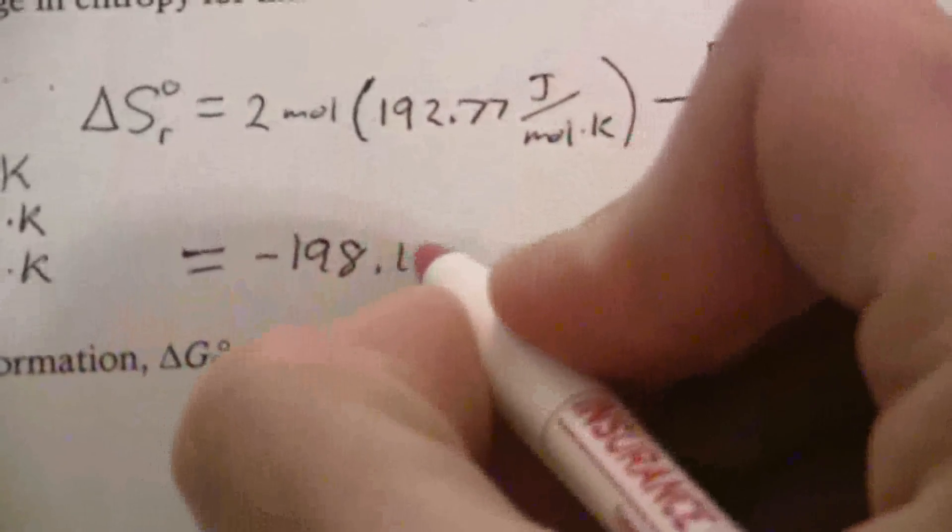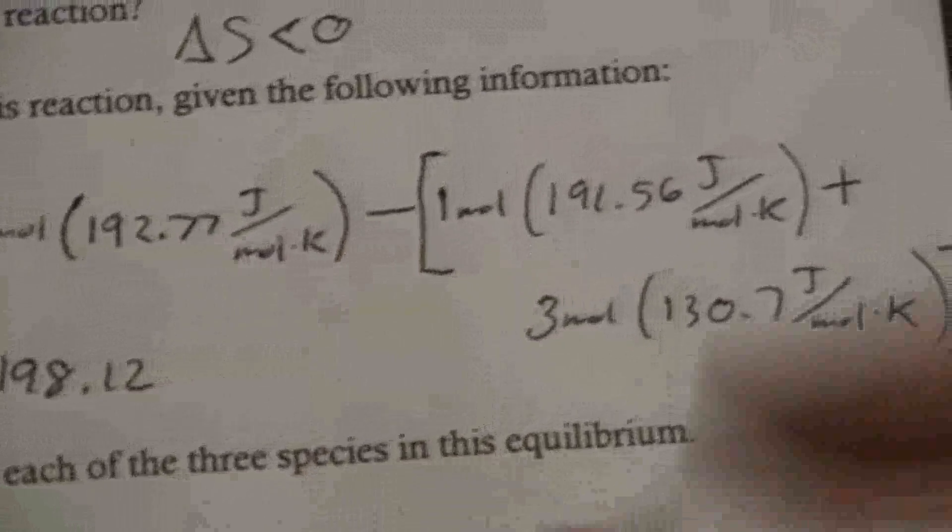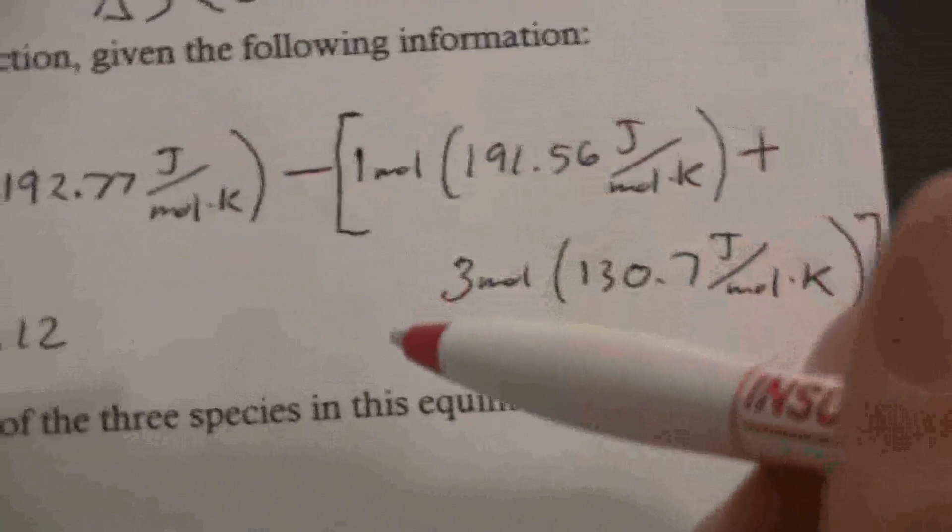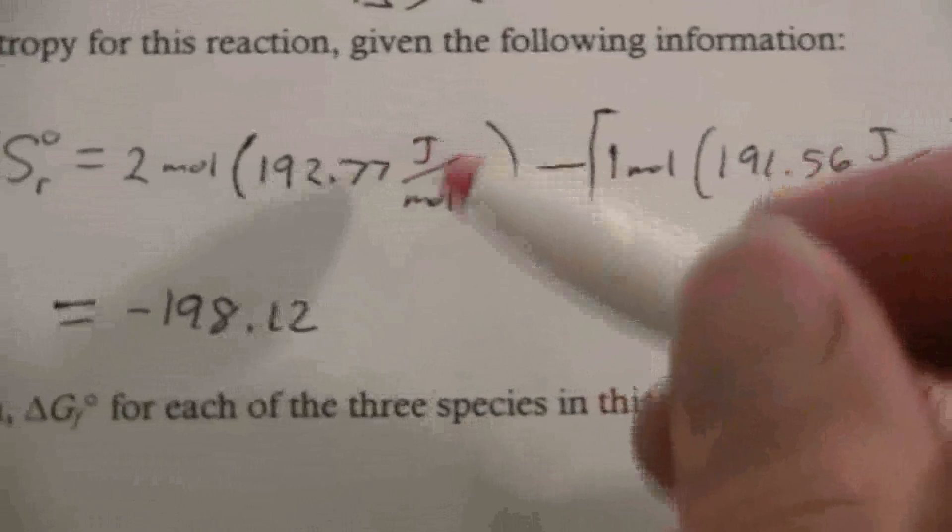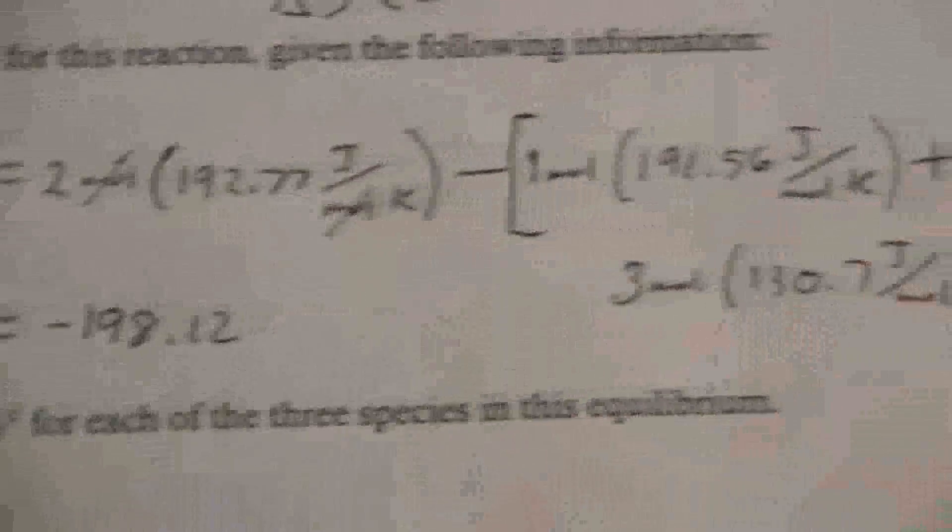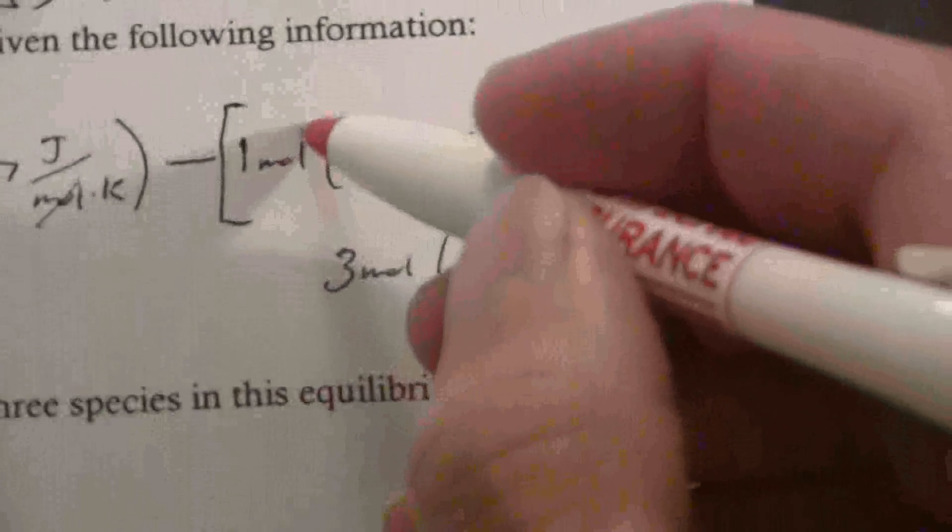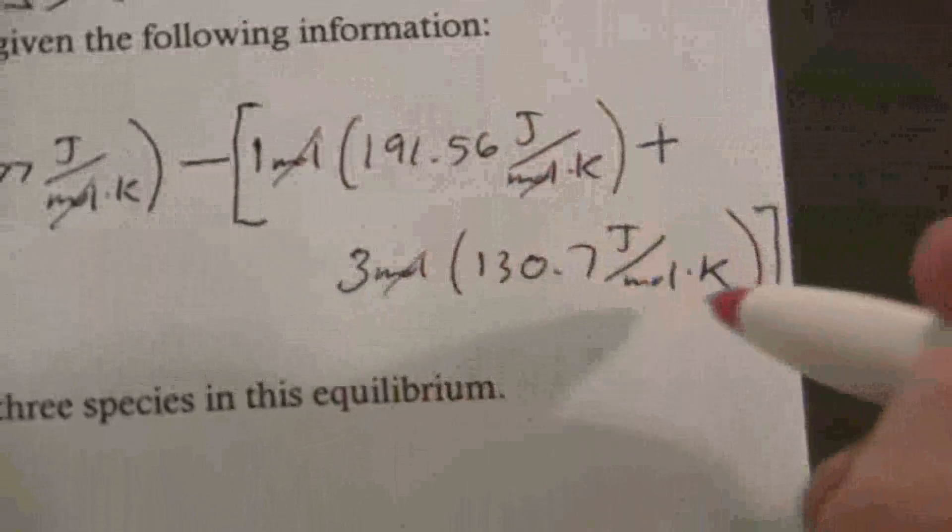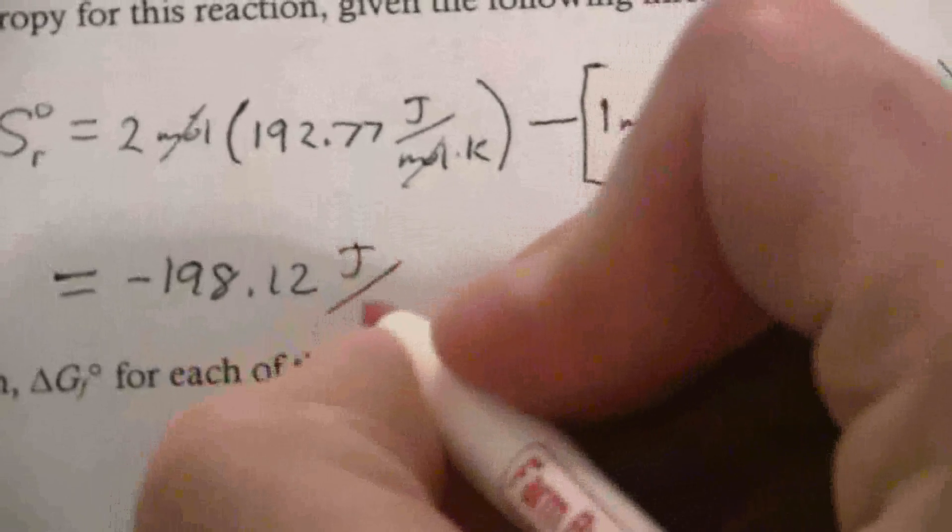So here, negative 198.12. The units, if I look at this here, I have joules per mole Kelvin, but my moles cancel. So this will be joules per Kelvin.